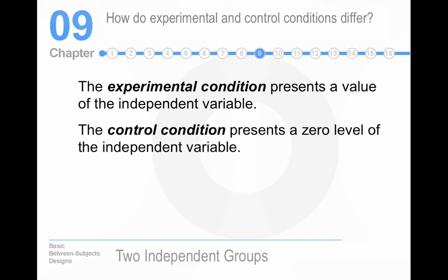How do they differ? Well, the experimental condition gets the independent variable. So, experimental condition in our example gets Red Bull, which means they get 80 milligrams of caffeine per Red Bull. And the control condition is a zero level of the independent variable. So, in our situation water, in which case you get zero milligrams of caffeine. So, it is truly a zero level.